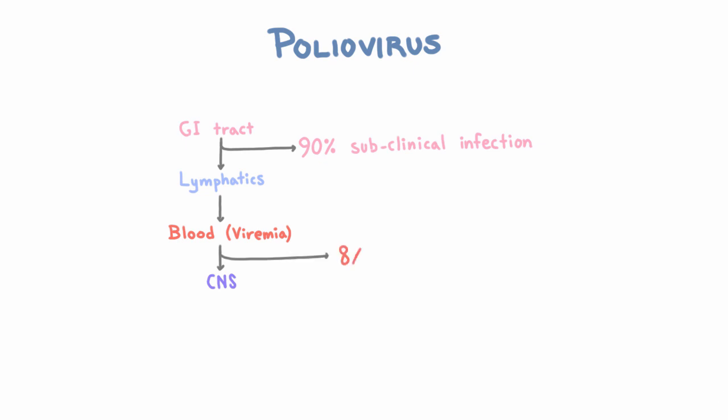In about 8% of people, the virus does get through the lymph nodes and into the blood, but then doesn't get into the central nervous system. So these people do have symptoms — those symptoms are because of the viremia. Just general symptoms of systemic inflammation: regular viral symptoms like fever, malaise, headache, maybe vomiting. And if the infection stops here, we call it abortive polio.